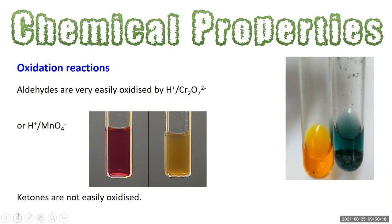Since mild oxidants can oxidize aldehydes, strong oxidants certainly can too. This is a great way to distinguish aldehydes from ketones, because ketones are not easily oxidized. Aldehydes are very easily oxidized by acidified dichromate ions, and you will see a color change from orange dichromate to bluey-green chromium(III). This is a positive test for an aldehyde — but remember, it would also work for primary or secondary alcohols, so it does not distinguish aldehydes from those.